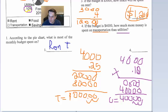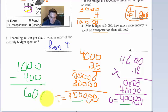So finally, what we're going to do is we're going to find the difference, right? How much more money is spent on transportation than utilities. So we're spending $1,000 on transportation. And we're spending $400 on utilities. We subtract them, and you should get $600. So we're spending $600 more on transportation than utilities.